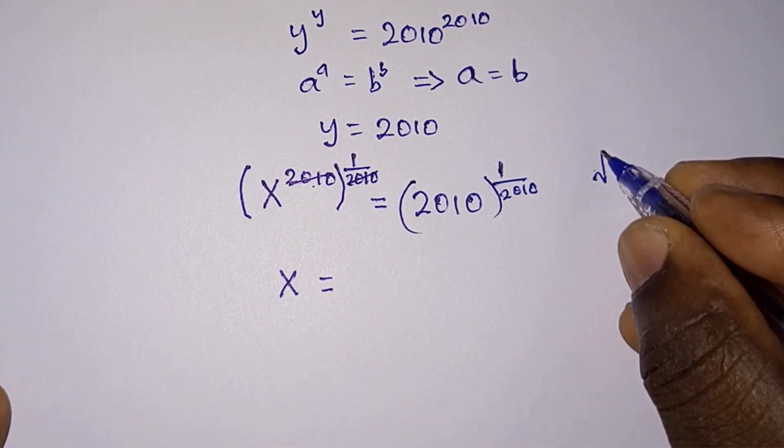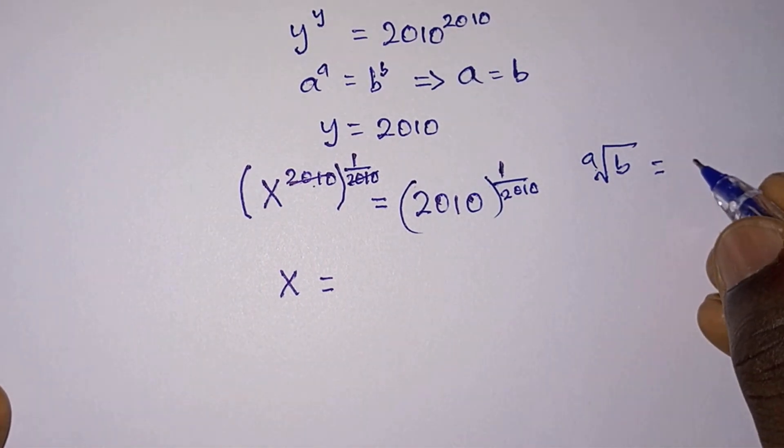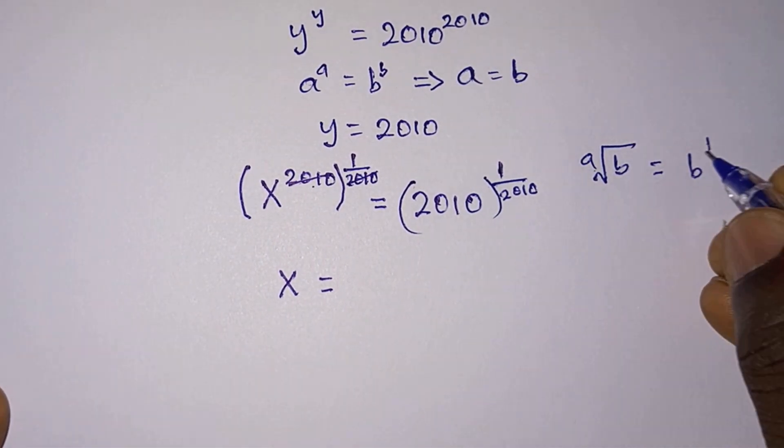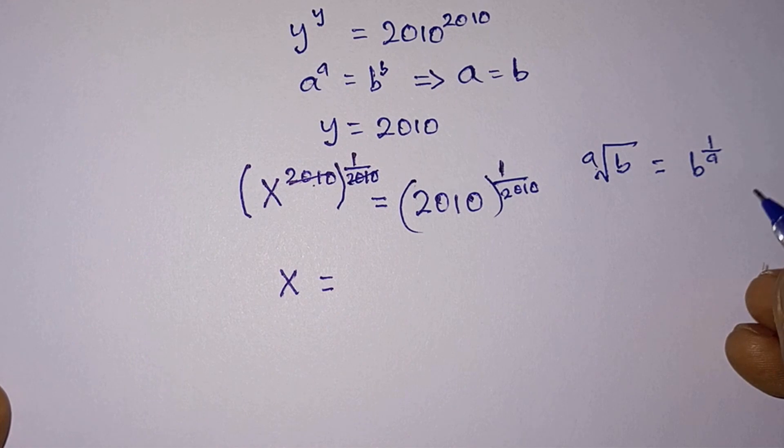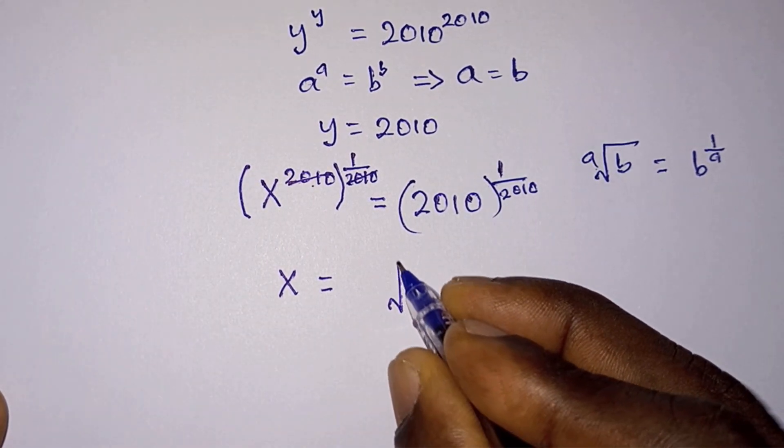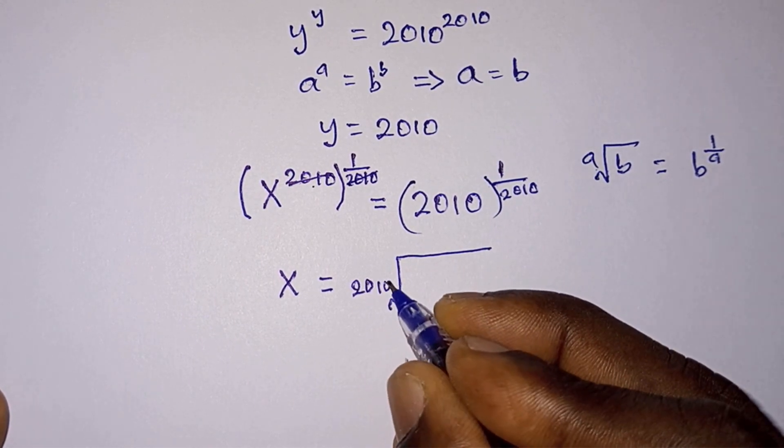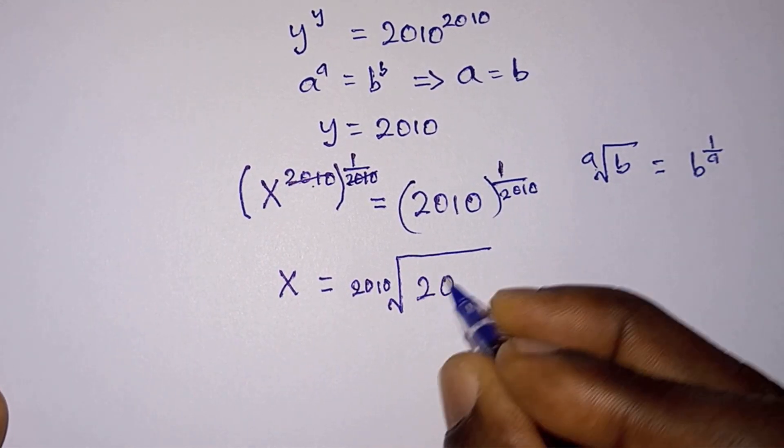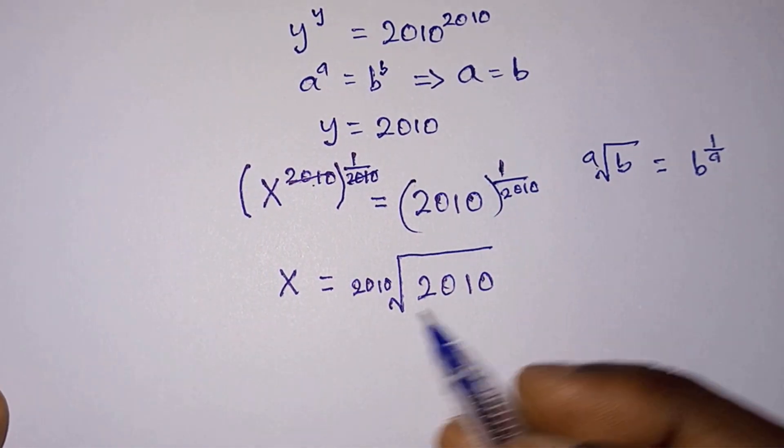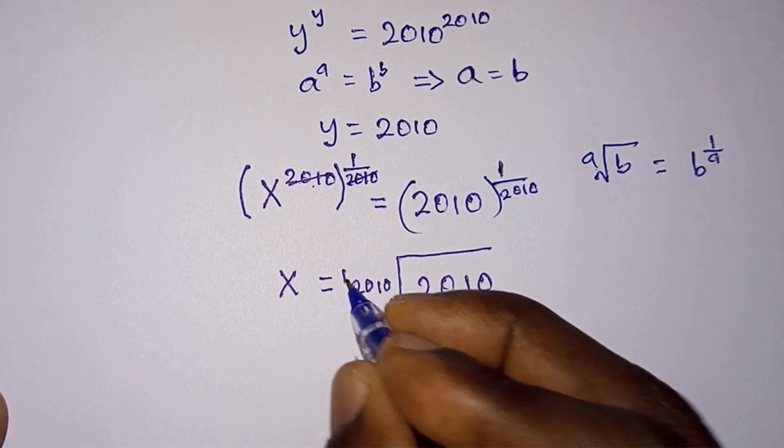On the left we have x is equal to, now from here note that if you have the ath root of b, this could be expressed as b to the power 1 over a. So from here we can rewrite it as 2010 root of 2010.